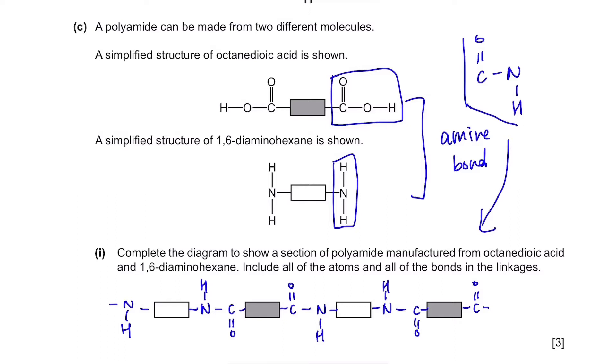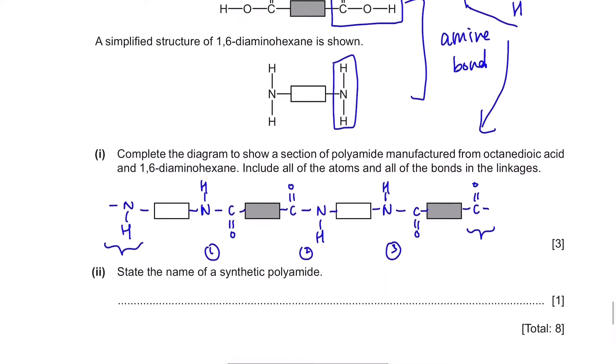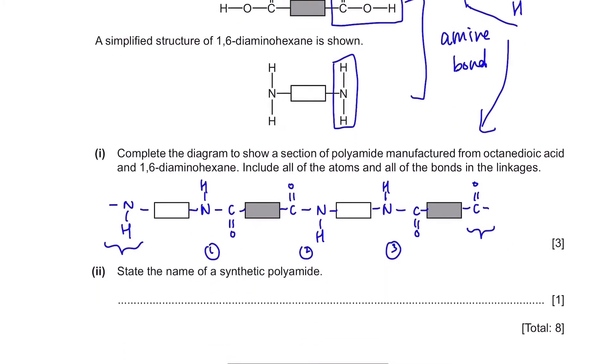Okay, and here's what it looks like when it's all drawn. We have the amide bonds. Three of them over here. One, two, three. And we need to show this continuation bonds to show that it can be linked infinitely. Now the last part, state the name of a synthetic polyamide. So the name of a synthetic polyamide is nylon.